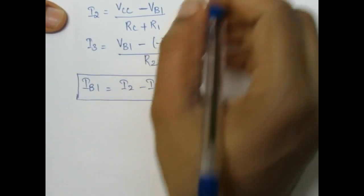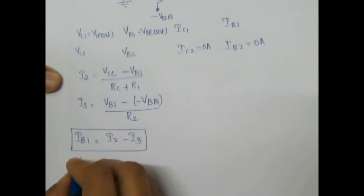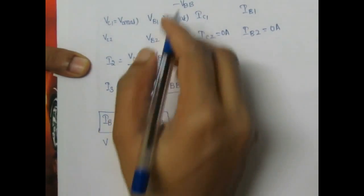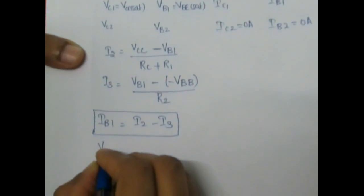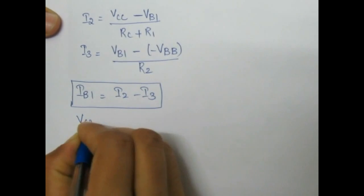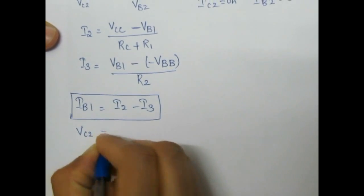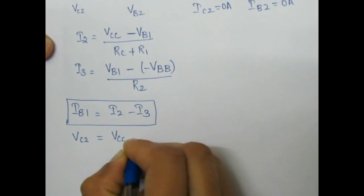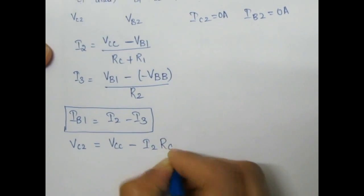VC2 is approximately equal to VCC minus I2 times RC, i.e., VC2 = VCC − I2 × RC, since we know I2.